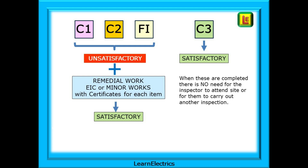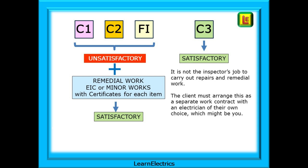Any C1, C2, or FI will automatically make the EICR unsatisfactory — a fail, if you like. Given the conditions that you observed, the installation is not in a satisfactory condition for continued use. This does not mean that the installation cannot be used by the client. It means that the client must take steps to rectify the issues noted within a reasonably short time. If it's a business, the client will usually be expected by the insurance company to put a plan in place to bring the installation up to the required standard. This is achieved by remedial work being carried out and each item being recorded as completed and satisfactory on either an EIC or minor works certificates. When all the work is completed and certified, the installation will automatically become satisfactory.